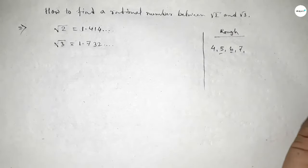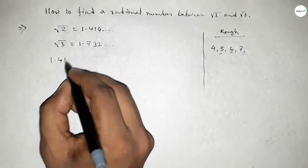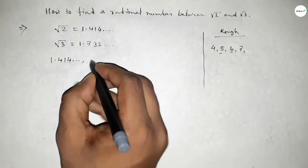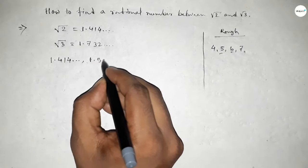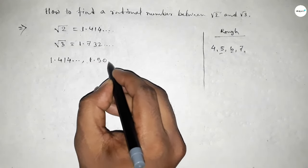Here I take 5, so 1.414 and 1.50. If you want to take 6, then you can write 1.60. So this is the required rational number between √2 and √3.